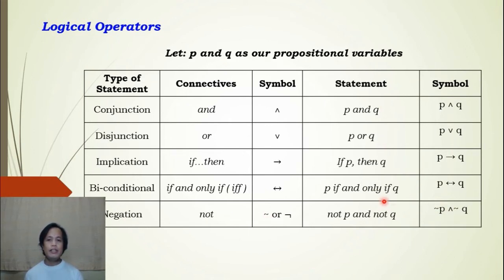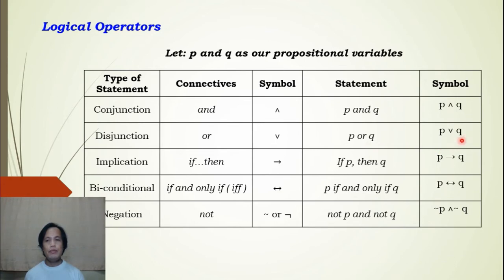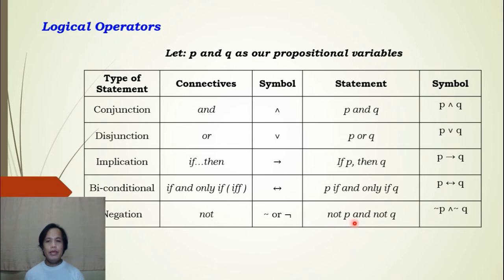For example, given statements p and q translated into symbolic logic: for conjunction, p and q uses the ∧ symbol; for disjunction, p or q uses the ∨ symbol; for implication, if p then q uses the → symbol; for biconditional, p if and only if q uses the ↔ symbol; and for negation, not p and not q uses the ~ symbol.